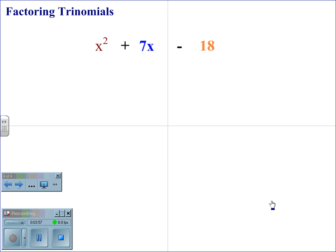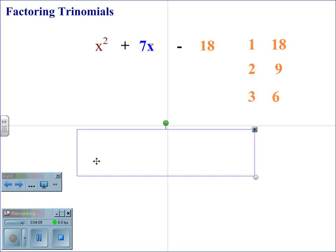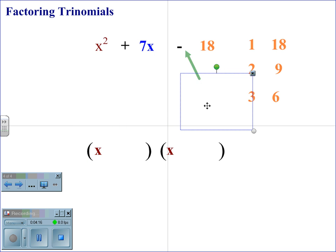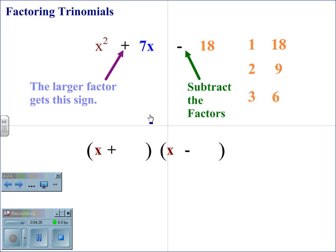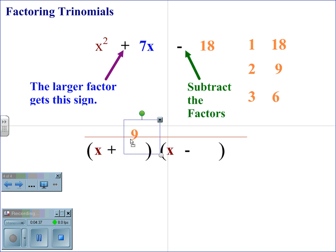When the signs are x squared plus 7x minus 18, we begin by factoring the c term. 1 and 18, 2 and 9, and 3 and 6 are the factors of 18. Our parenthesis sets remain the same, and x squared factors to x times x. Because the second sign is negative, we are subtracting the factors, so the signs have to be positive and negative in the parenthesis. The larger factor will get the first sign. In order to get 7, we need to subtract 9 minus 2. Therefore, the 9 will go with the positive and the 2 will go with the negative.